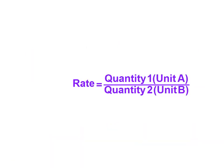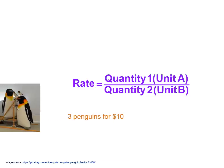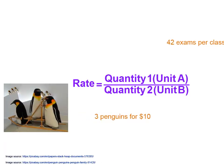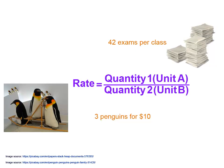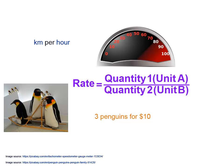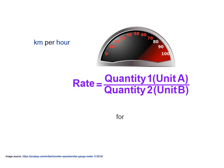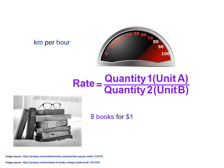Some examples include three penguins for $10, or 42 exams per class. Wherever we hear the term 'per', such as kilometres per hour, or 'for', as in eight books for a dollar, we know that it's referring to a rate. Words like 'to each' and 'for every' are also clues that a rate is being used.